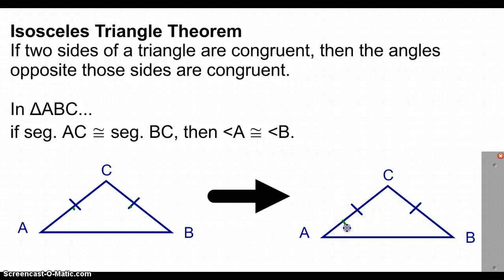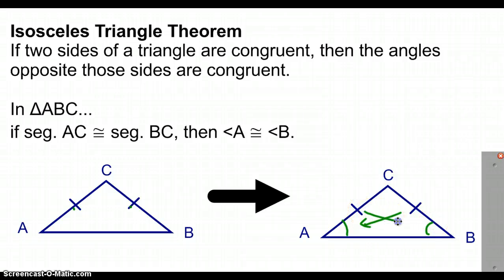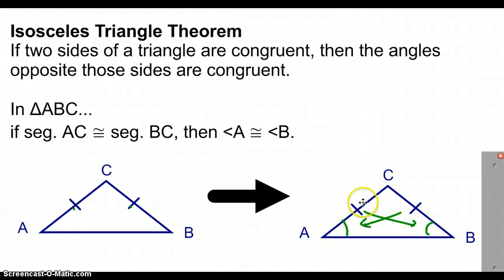Based off the fact that those sides are congruent, we can show that angle A and angle B are congruent, as angle A is across from side BC and angle B is across from side AC.